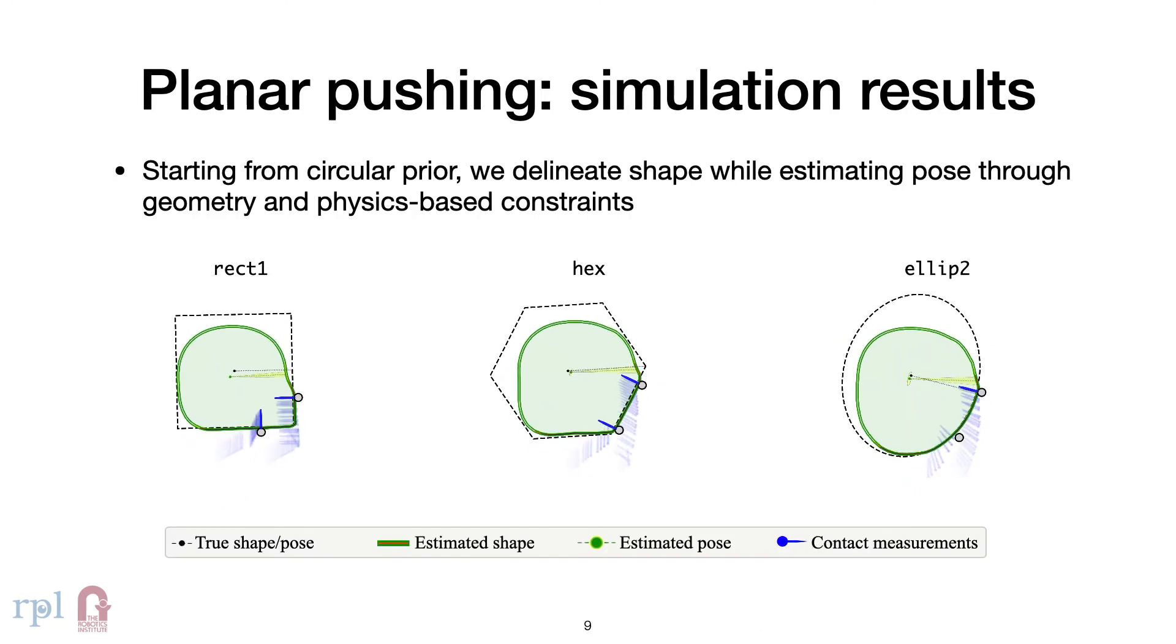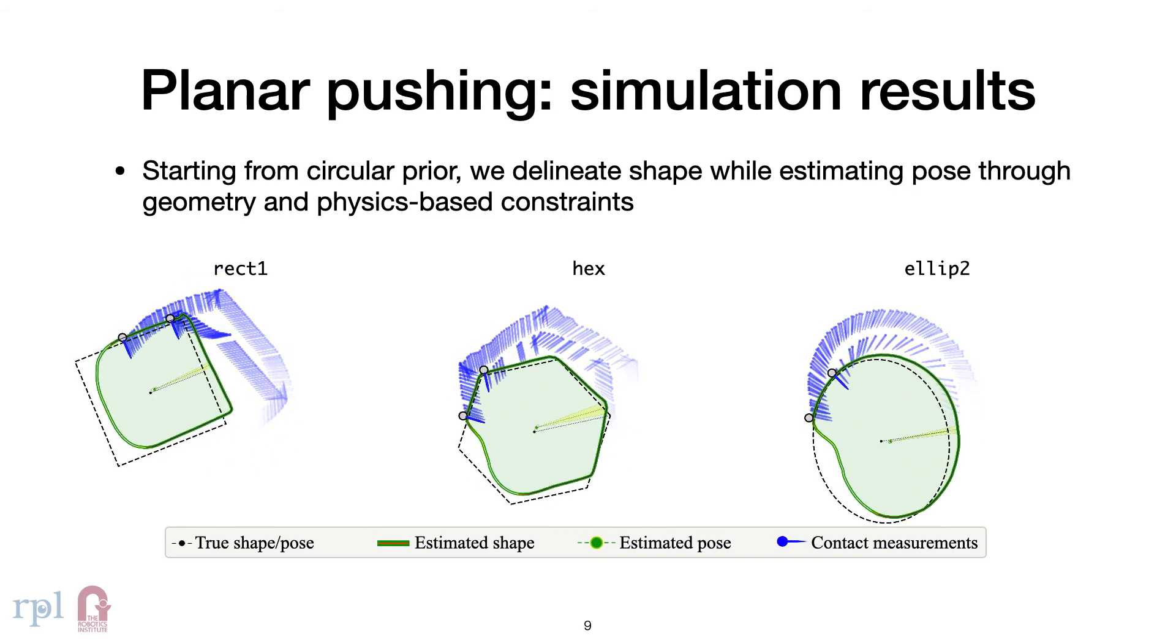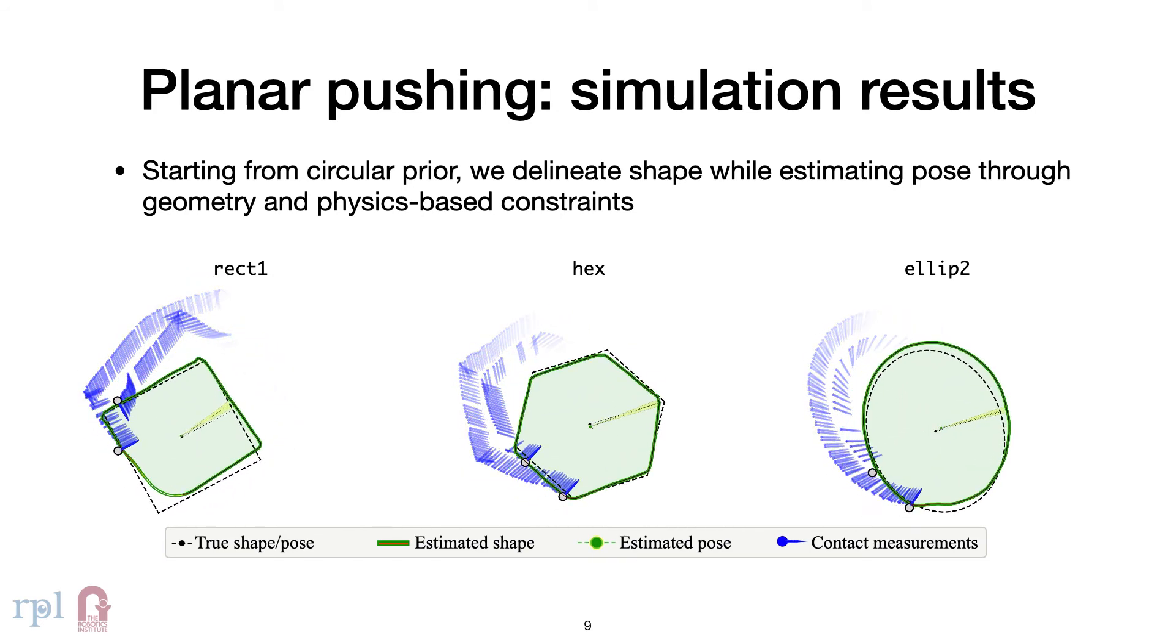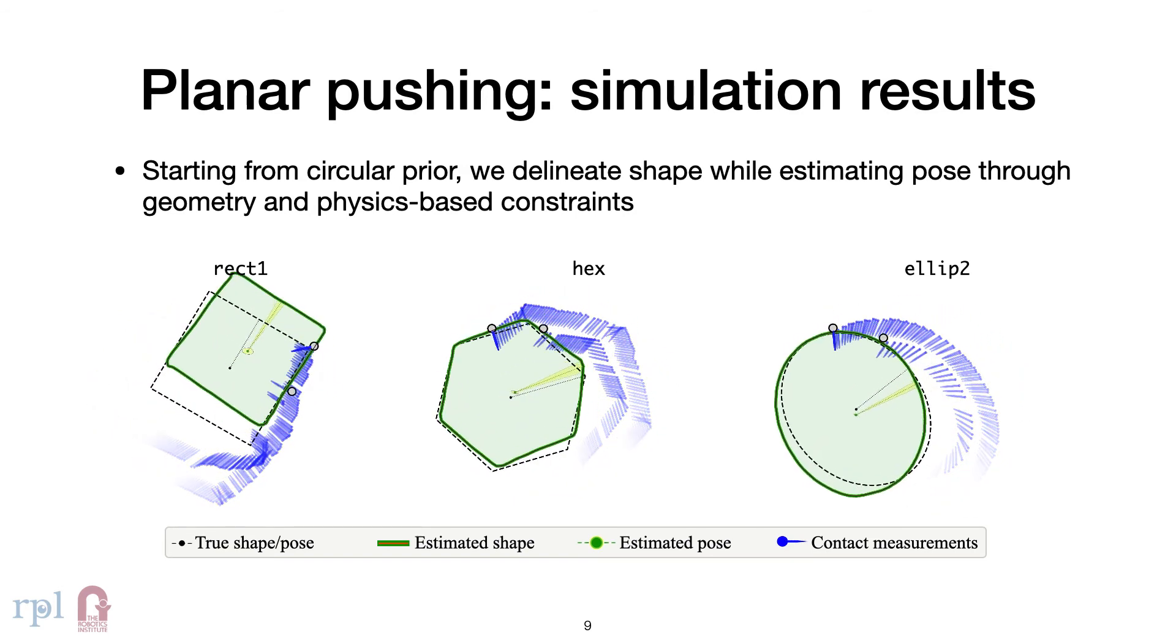With a circular prior and known initial pose, we can build the shape of the object while also accounting for its motion. The GPIS representation is smooth and generalizes well to arbitrary objects.